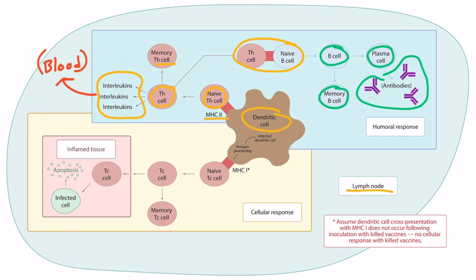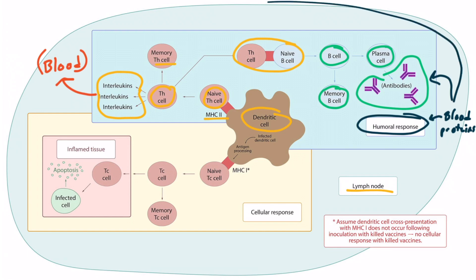What I've shown describes the humoral response. The term humoral, or humor, refers to the blood — specifically the proteins that travel through the blood, for example the antibodies and the interleukins. When you think of humoral immunity, think of interleukins from helper T cells and antibodies from B cells.